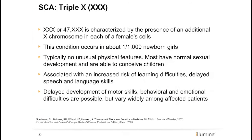Another sex chromosome abnormality in females is XXX, or 47XXX. This condition occurs in approximately 1 in 1,000 newborn girls. It has mild clinical features with some learning difficulties and perhaps some developmental delay, but the spectrum varies. XXX females are fertile.